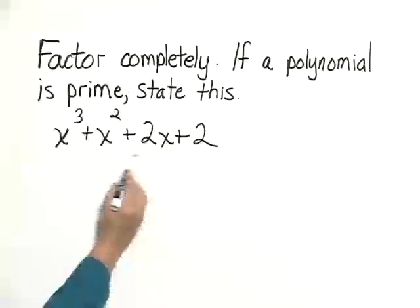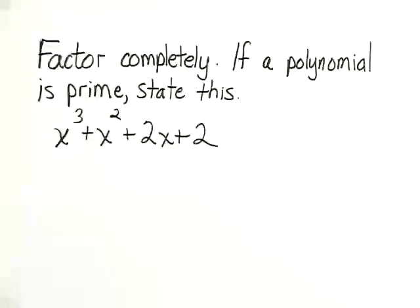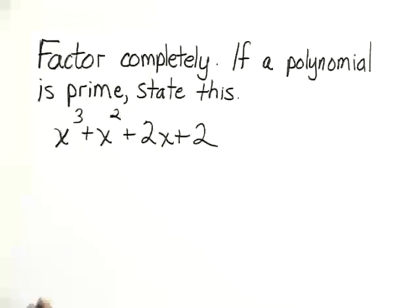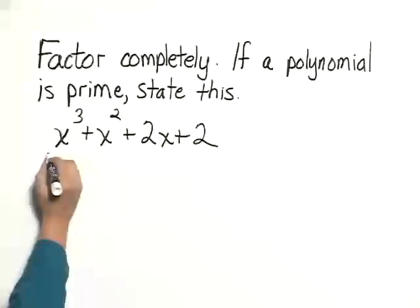We first of all check to see if there are any common factors, and there are not. And then we notice that there are four terms in this polynomial. When we have four terms we try factoring by grouping.